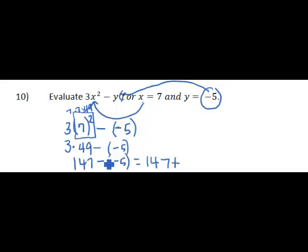But to do that change, you also have to change the following number to the opposite. So the negative 5 becomes positive 5. So we end up adding, instead of subtracting a negative, we add 5. So the result of 147 plus 5 is 152.